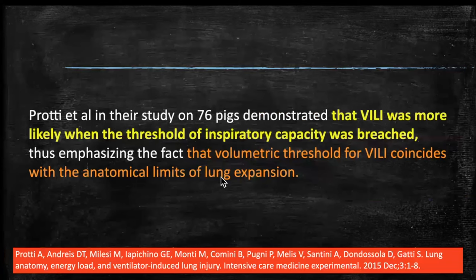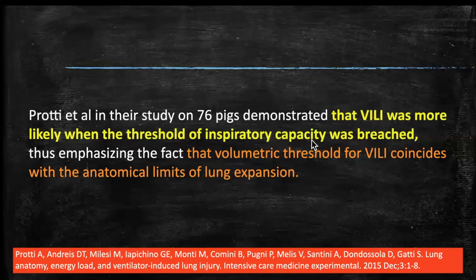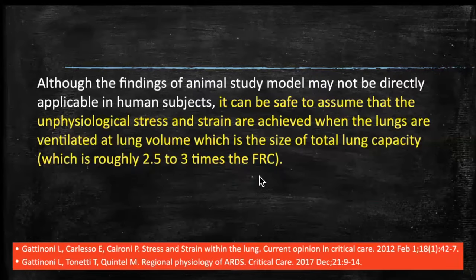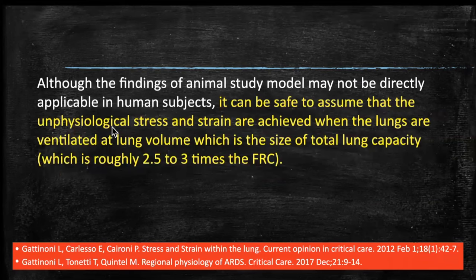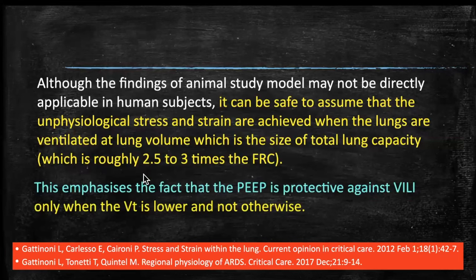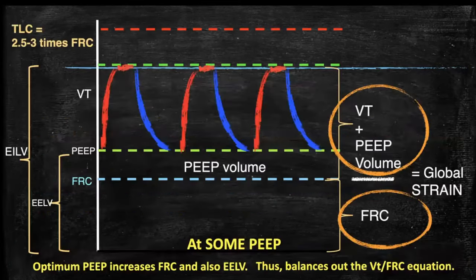Protea et al demonstrated in 76 pigs that ventilator-induced lung injury was more likely when the threshold of inspiratory capacity was reached, emphasizing that the volumetric threshold for VILI coincides with anatomical limits of lung expansion. Although animal models can't be directly applied to humans, we can safely assume that unphysiological stress and strain are achieved when lungs are ventilated at total lung capacity — roughly 2.5 to 3 times FRC. This emphasizes that PEEP is protective only when tidal volume is in a safe zone.